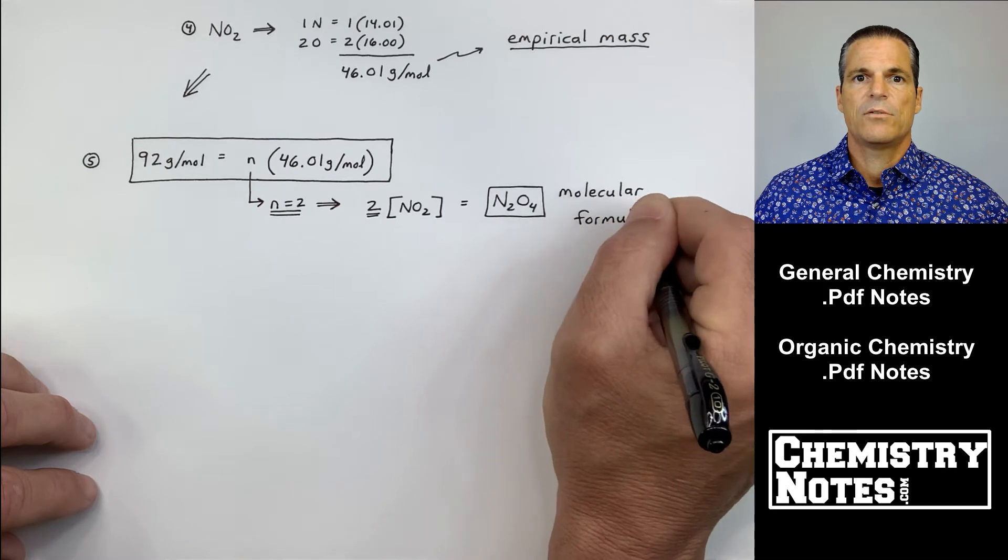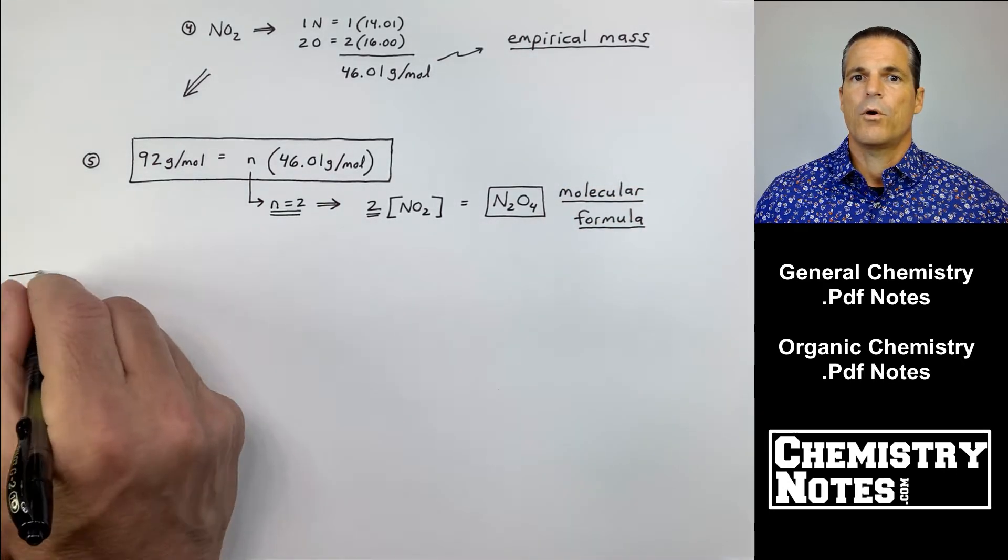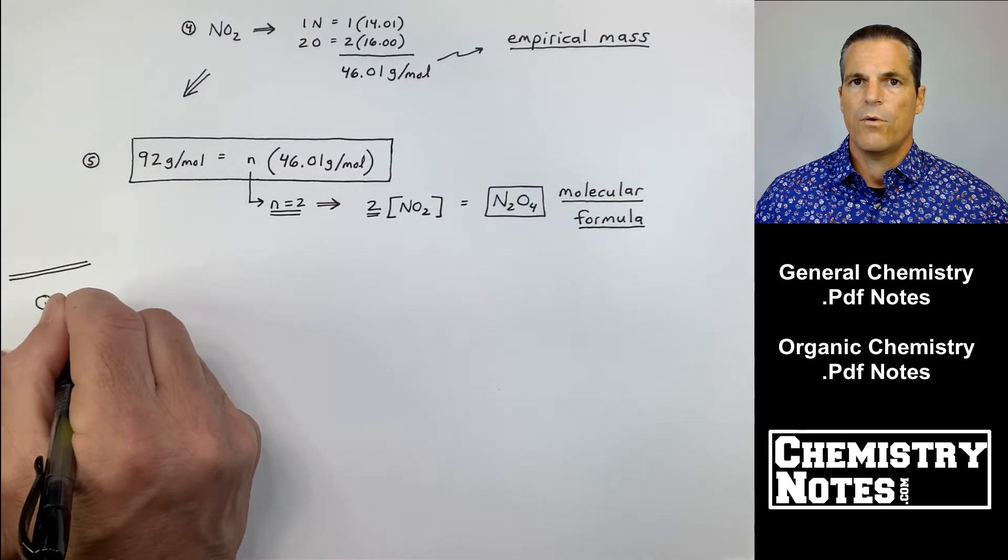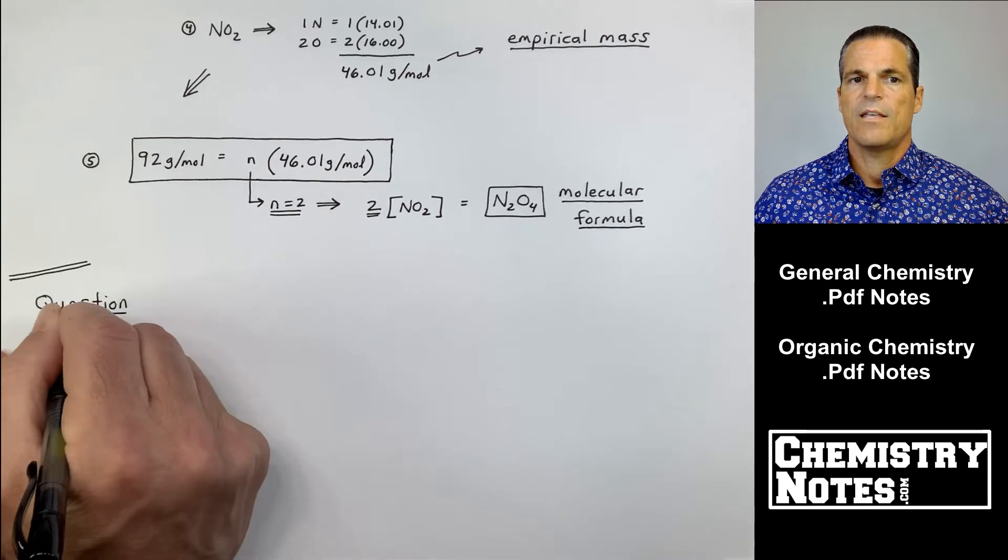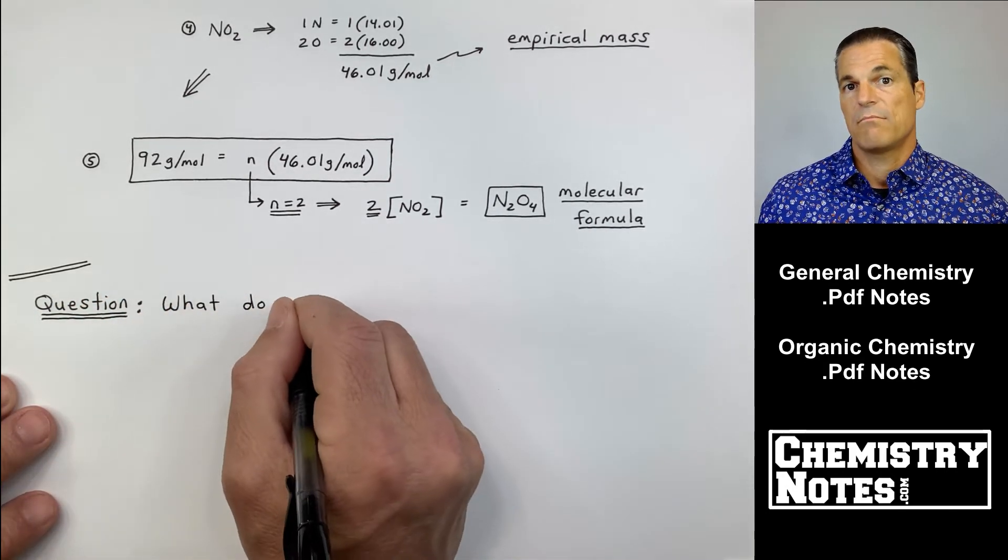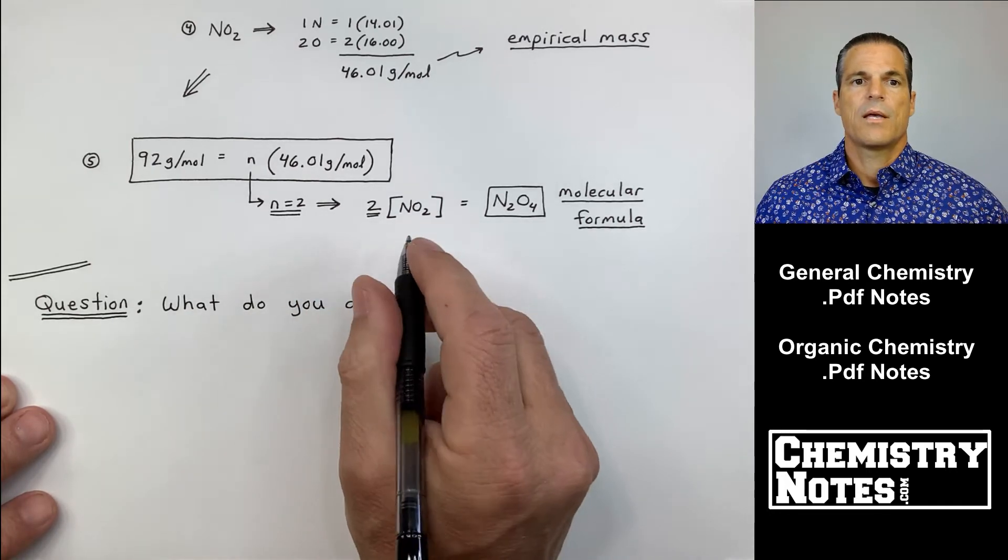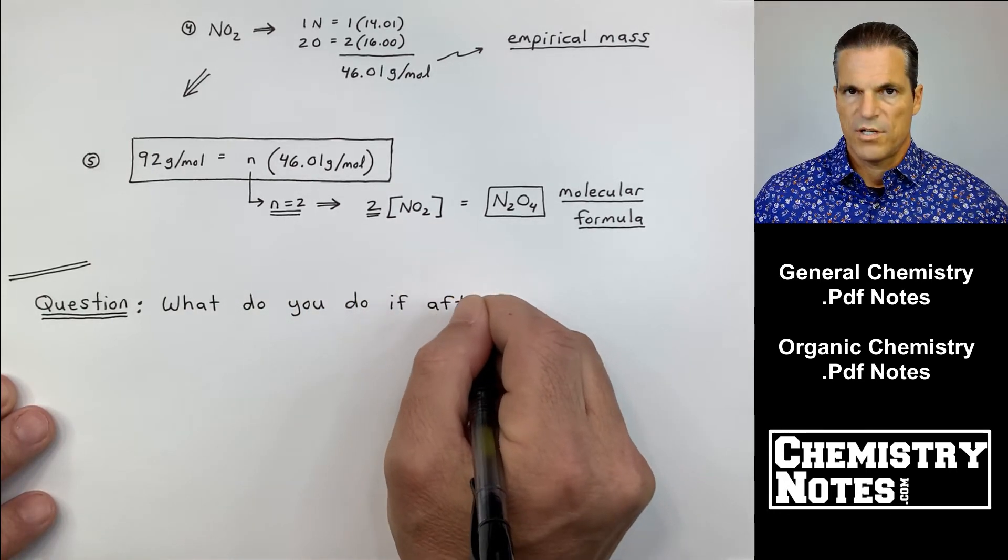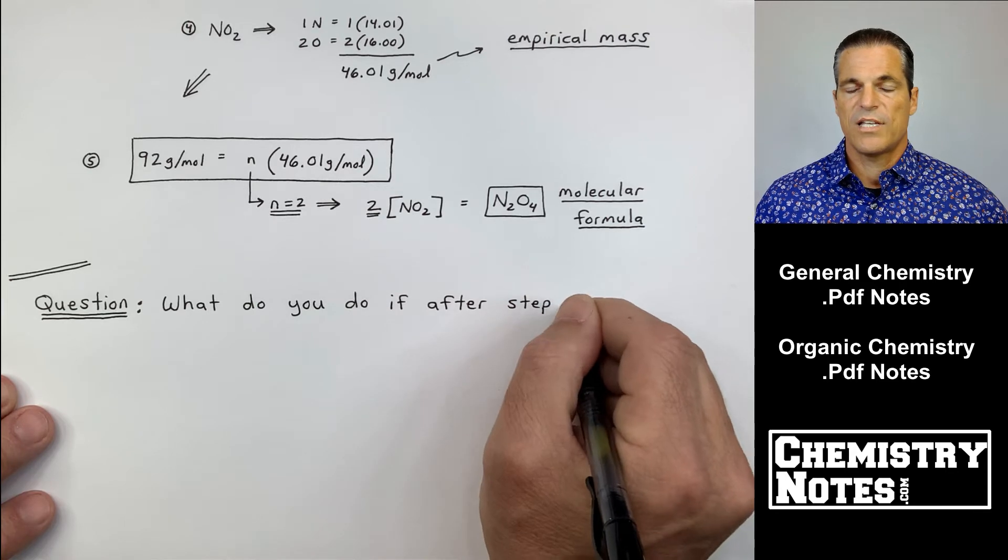Two times NO2, I get a molecular formula of N2O4. Notice how the empirical formula is just the simplest whole number ratio of that, NO2.